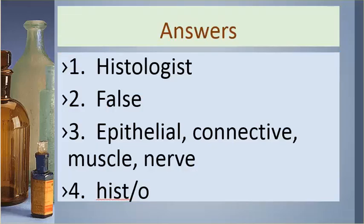Answers. Number one is histologist. Number two is false. Number three: epithelial, connective, muscle, nerve. Number four is histo.